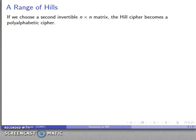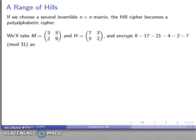One of the more interesting possibilities is that I could use a second invertible N by N matrix, and that turns the hill cipher into a polyalphabetic cipher. So for example, let's say I take my second matrix, 3-5-2-9, and my hill cipher is going to be something like this.